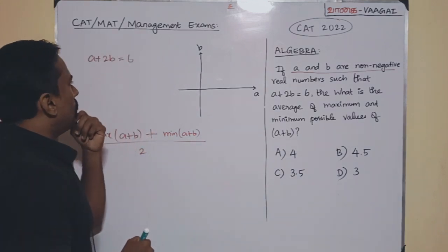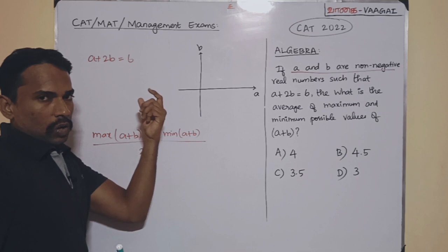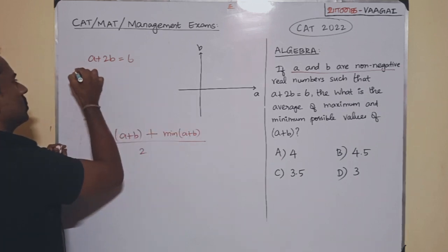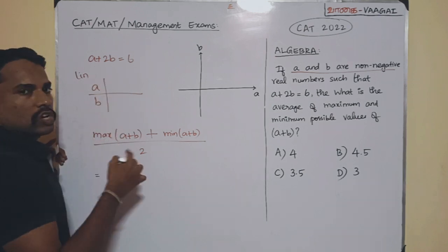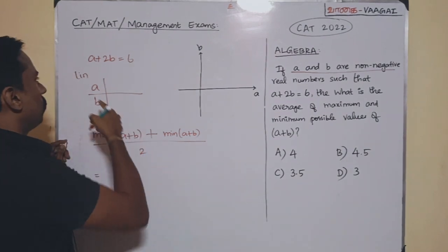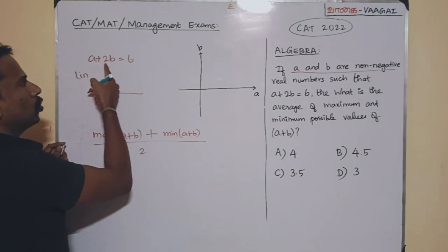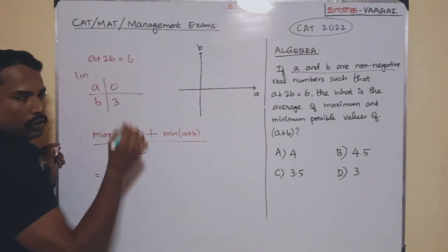Now, let us take a note of how will be the values because it is going to be a linear equation. So, in that sense, I will test the values of A and B by taking each of them to be equal to 0. Now, first I will put A as 0. When you put A as 0, what happens? 2B will be equal to 6, which means B is equal to 3.